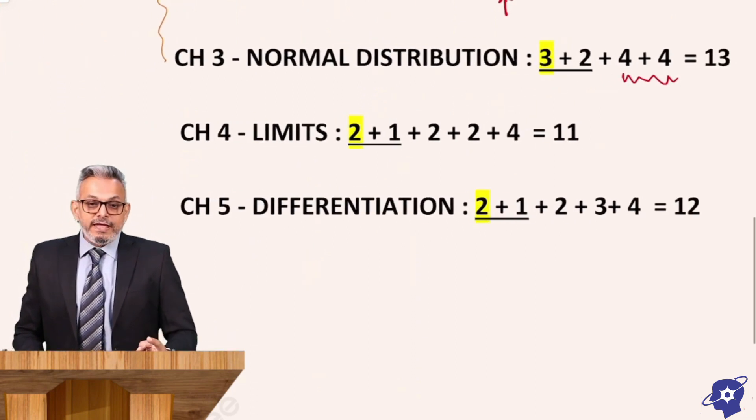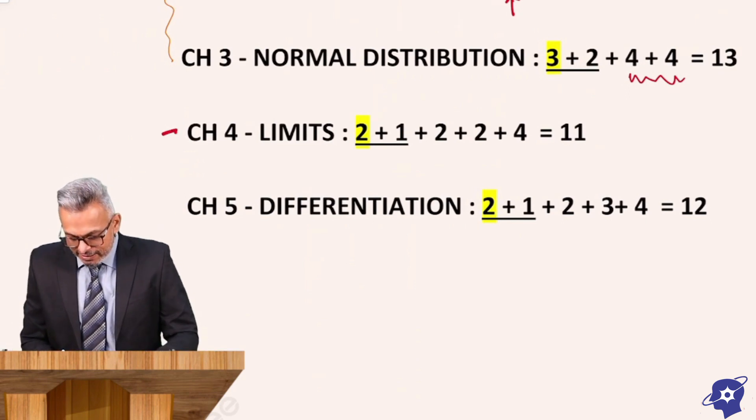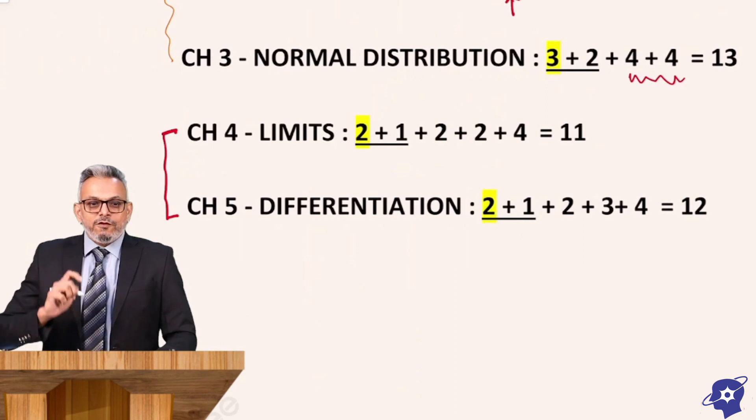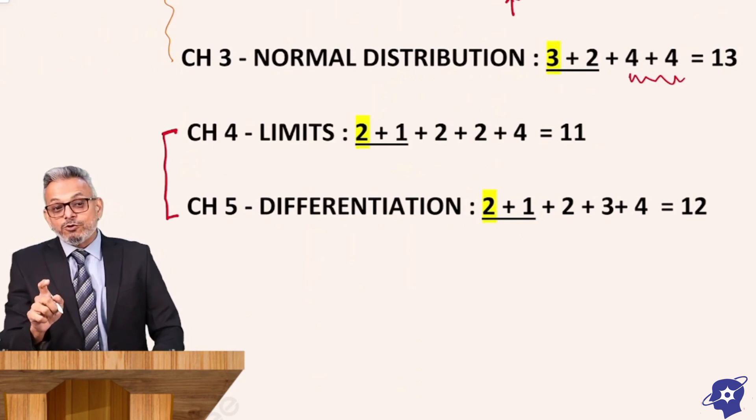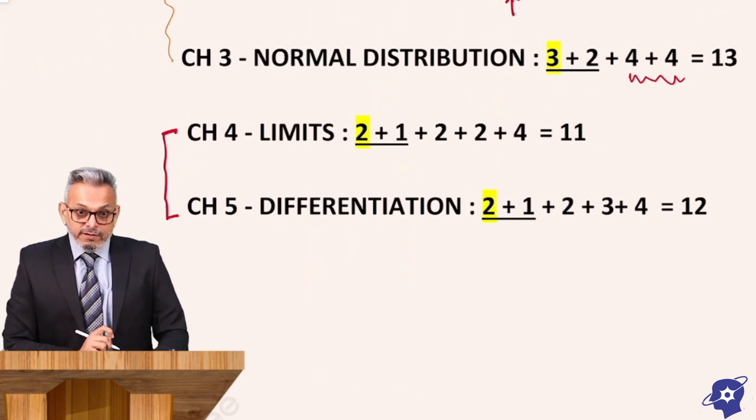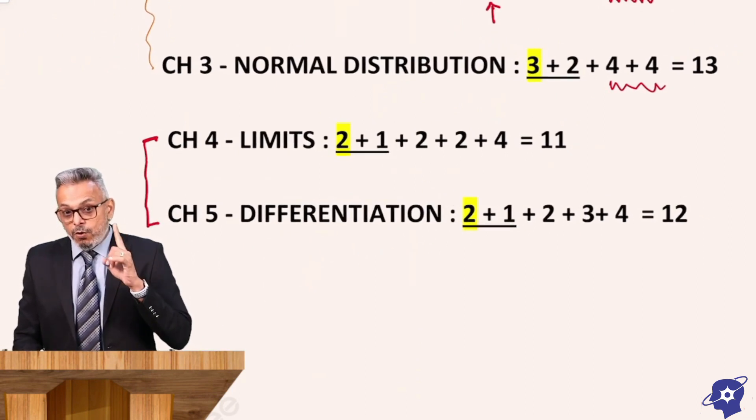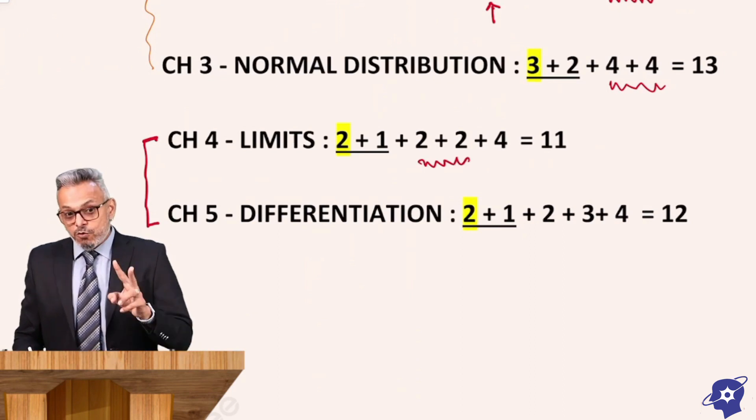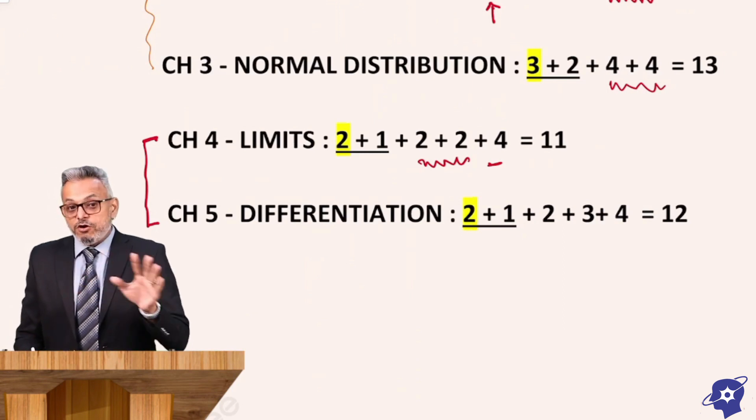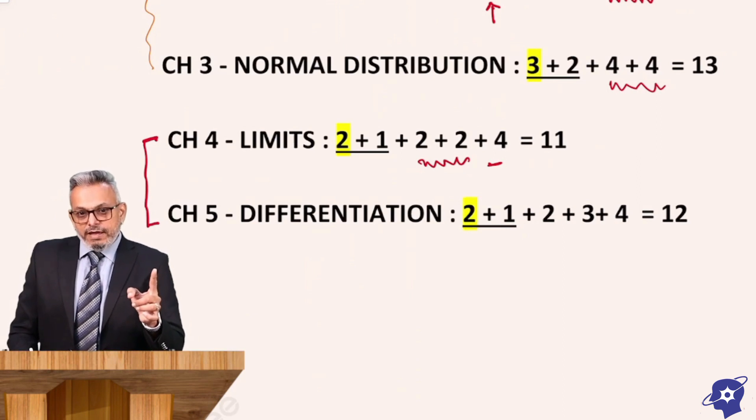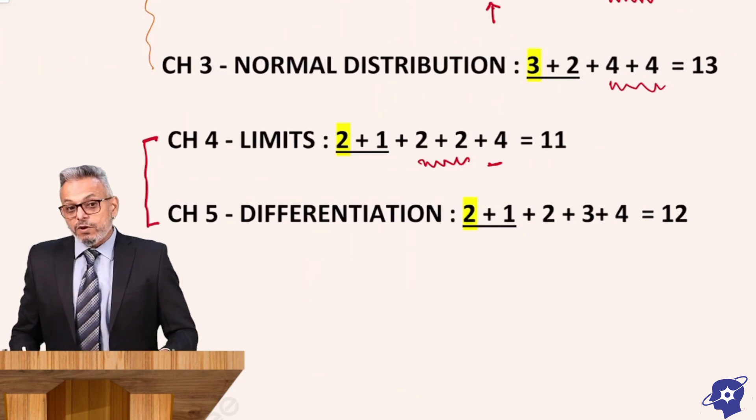We come to chapter number 4, that is Limits. Limits and differentiation are again connected chapters with each other. If you want to do differentiation, we cannot directly do differentiation. First we have to do limits. Chapter 4 Limits, again 2 + 1. So 2 MCQ and 1 one liner. Then 2 marks, 2 questions and 4 marks single question. Here you can say 4 mark single question, so there will not be any option within the chapter. There will be options in 4 mark questions but not within the chapter. So this totals to 11 marks.